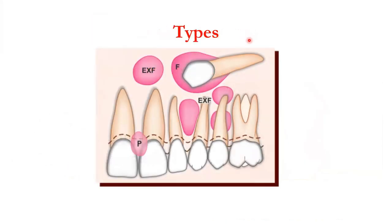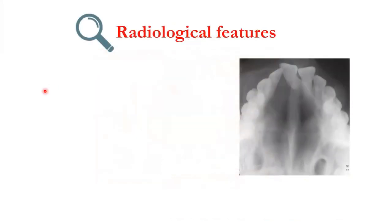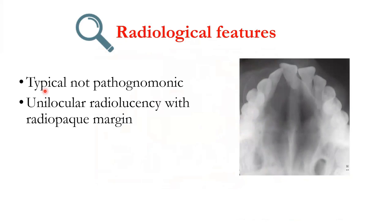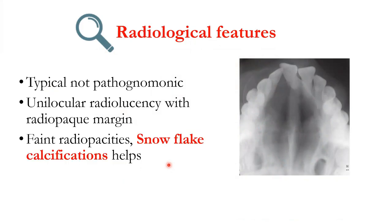There are different types: follicular — surrounding the impacted tooth; extrafollicular — seen between roots or elsewhere in the jaw; and a peripheral variant on the soft tissue. Radiologically, you will see a unilocular radiolucency with radio-opaque margins, and there may be faint radio-opacities referred to as snowflake calcifications, which help in ruling out differential diagnoses.